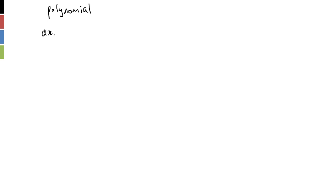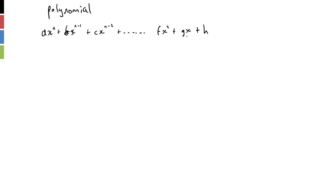Mathematical literacy. First off we're going to start with a polynomial. What is a polynomial? You've seen a couple of them — the basic quadratics, the basic linear equation. The most basic form of a polynomial is ax^n plus bx^(n-1) plus cx^(n-2) plus dot dot dot, and we keep going until we have fx^2 plus gx plus h. So a polynomial is a collection of all these terms in increasing levels of power.